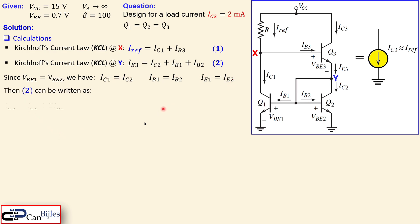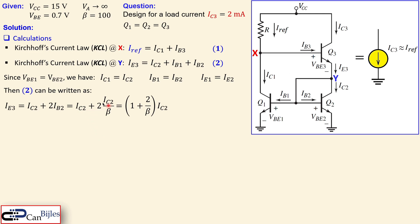Using equation number two and substituting IB1 = IB2, we can write IE3 = IC2 + 2·IB2. We then rewrite IB2 as IC2/β, and factoring out IC2 gives IE3 = (1 + 2/β)·IC2. Since IC1 = IC2, we have our simplified equation.